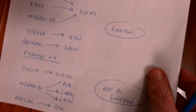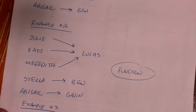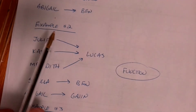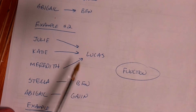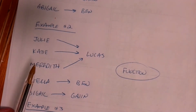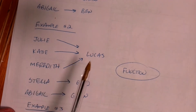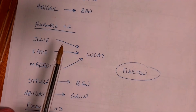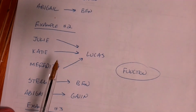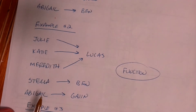Example two is also a function. This one looks a little different, but it is still a function because Lucas is a popular boy — there are three girls that all like Lucas: Julie, Katie, and Meredith. But each girl likes exactly one boy; it just so happens they all like the same boy. Then Stella likes Ben and Abigail likes Gavin. This is also a function.